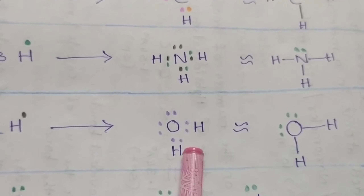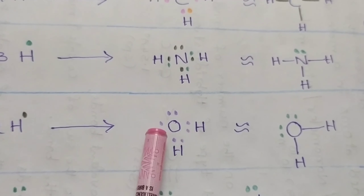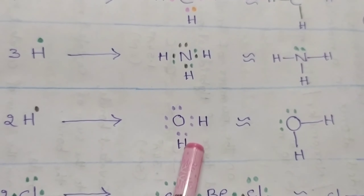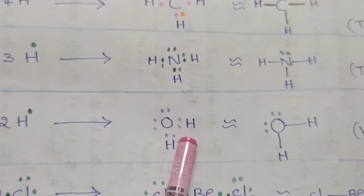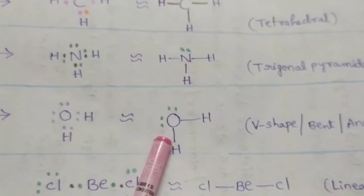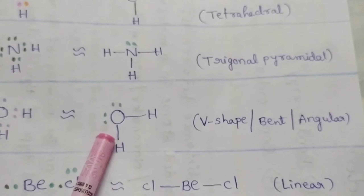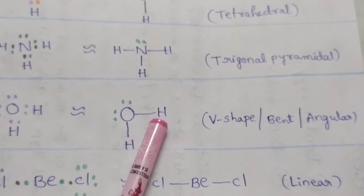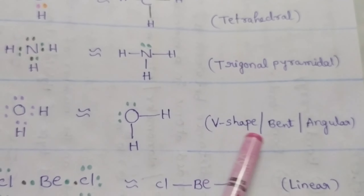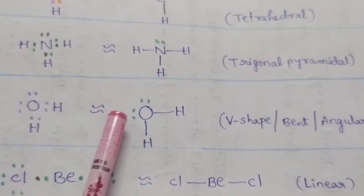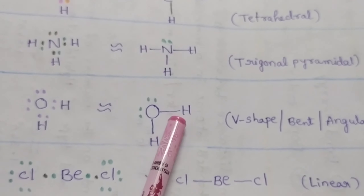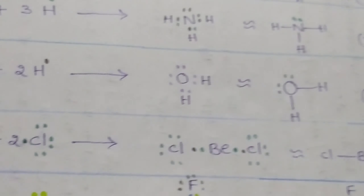After the formation of a water molecule, oxygen obtains an eight-electron configuration. The water molecule has a V-shape, also called bent or angular in shape. It contains two lone pairs of electrons and two bond pairs of electrons.